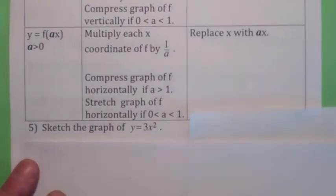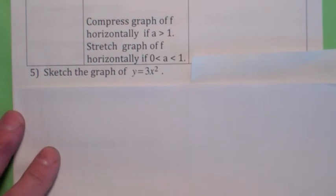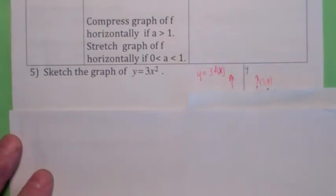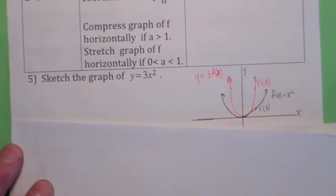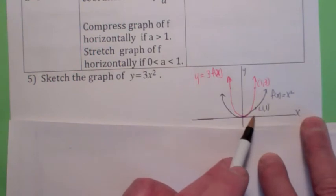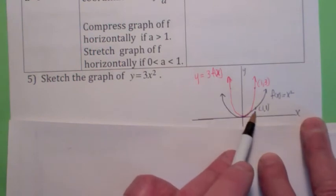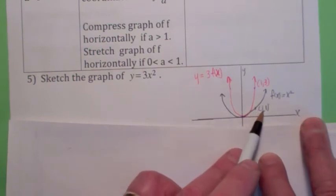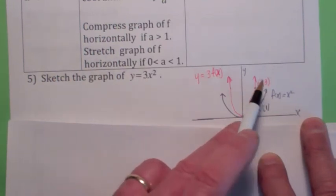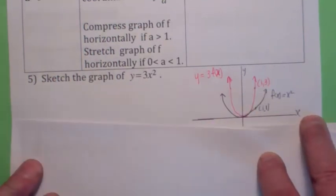Here you've taken the function f of x equals x squared and you're multiplying the y coordinate by 3. So that's going to be a vertical stretch by a factor of 3. You're literally multiplying the y coordinates by 3. So the y coordinate on x squared at (1, 1) — the y coordinate was 1 — this y coordinate becomes 3. So the point (1, 1) turns into the point (1, 3).